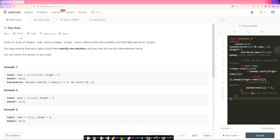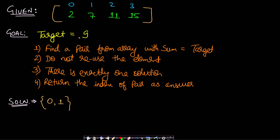Let us now have a look at the problem. Given an array of integers nums and an integer target, return the indices of the two numbers such that they add up to the target. You may assume that each input would have exactly one solution, and you may not use the same element twice. The constraints are: find a pair from an array with sum equal to the target, do not reuse the element, and there is exactly one solution.